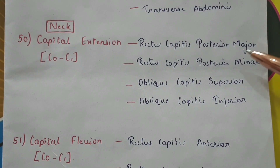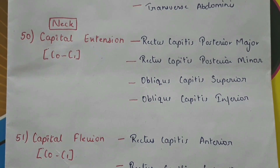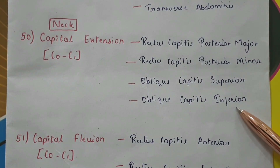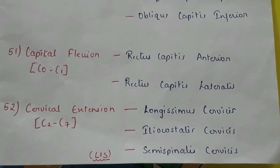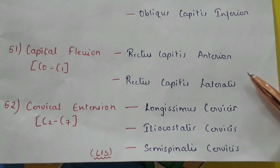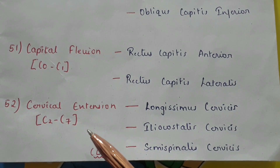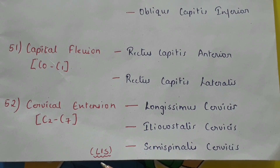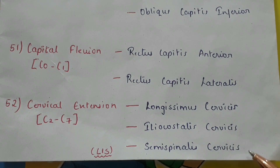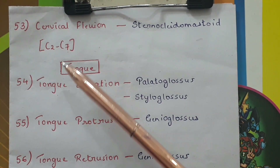In the neck, capital extension from C0 to C1 by the rectus capitis posterior major, rectus capitis posterior minor, obliquus capitis superior. Capital flexion from C0 to C1 by the rectus capitis anterior and rectus capitis lateralis. Cervical extension from C2 to C7 — you can remember LIS: L for longissimus cervicis, I for iliocostalis cervicis, S for semispinalis cervicis. Cervical flexion from C2 to C7 by the sternocleidomastoid.